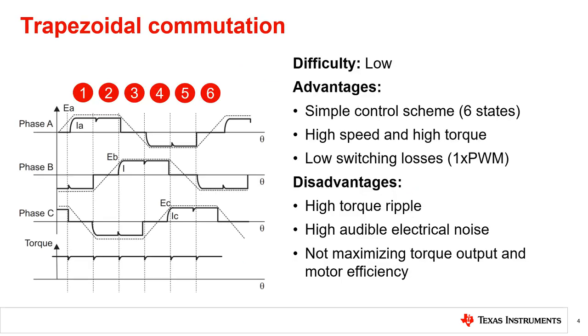Now that we have defined motor commutation and how it works, let's discuss some different control methods and the traits of each. First up, we have trapezoidal control, or TRAP for short. This commutation logic is relatively easy to implement and can produce high torque and high speed while maintaining low switching losses.